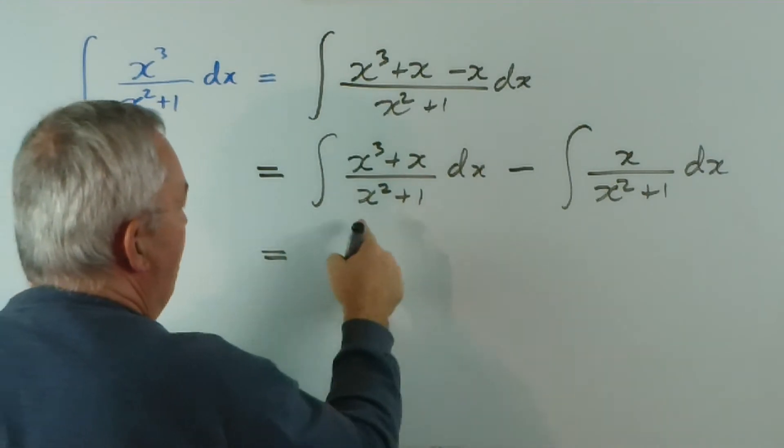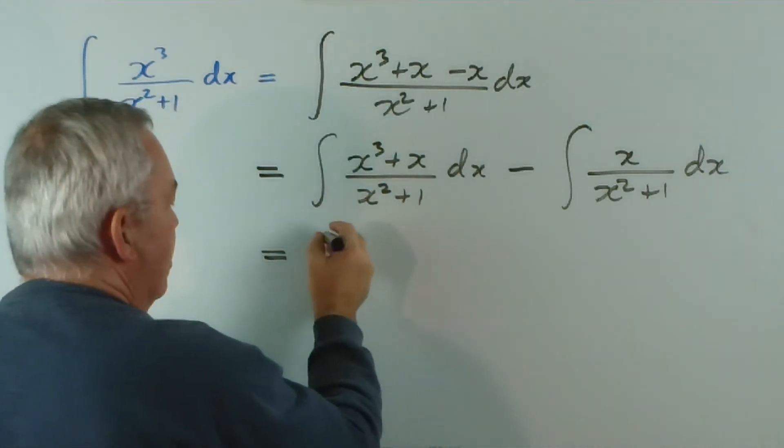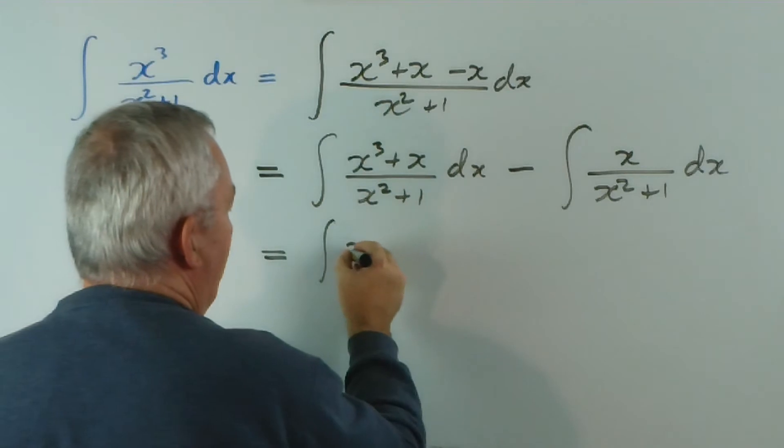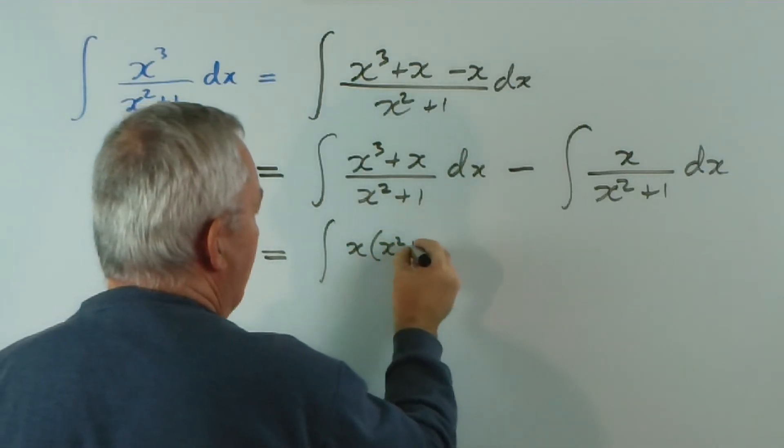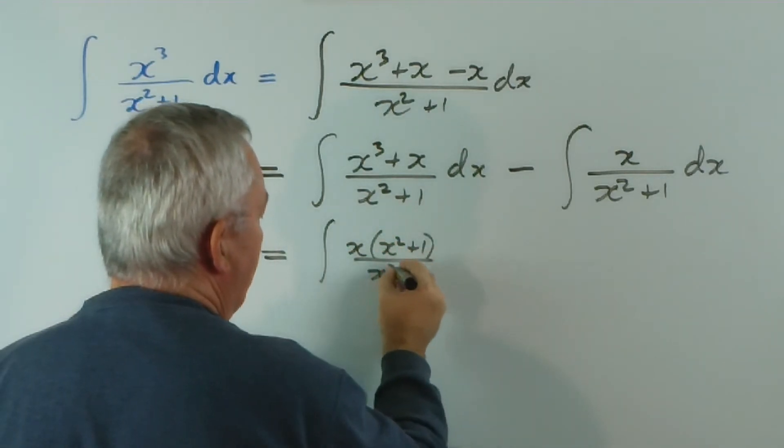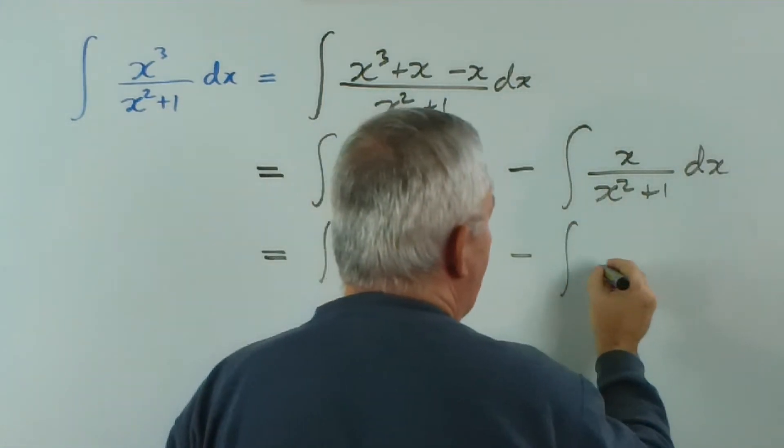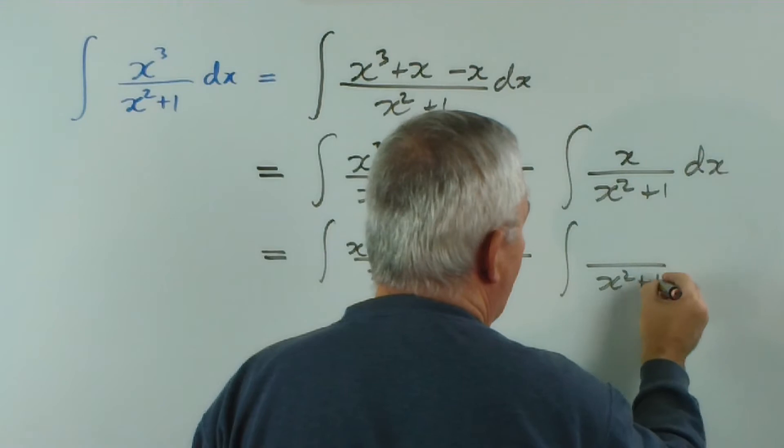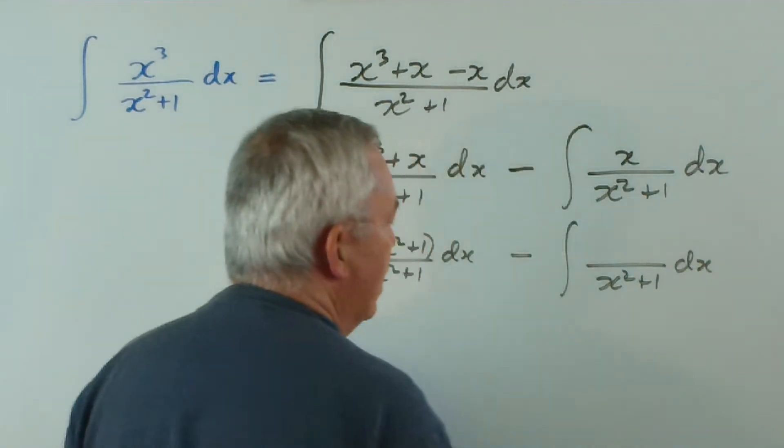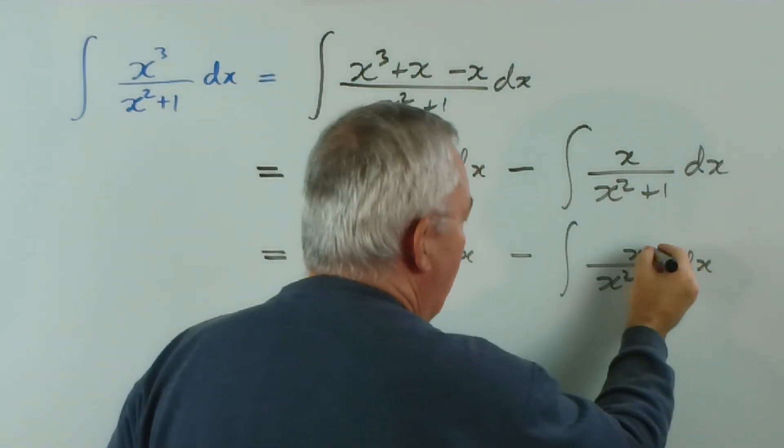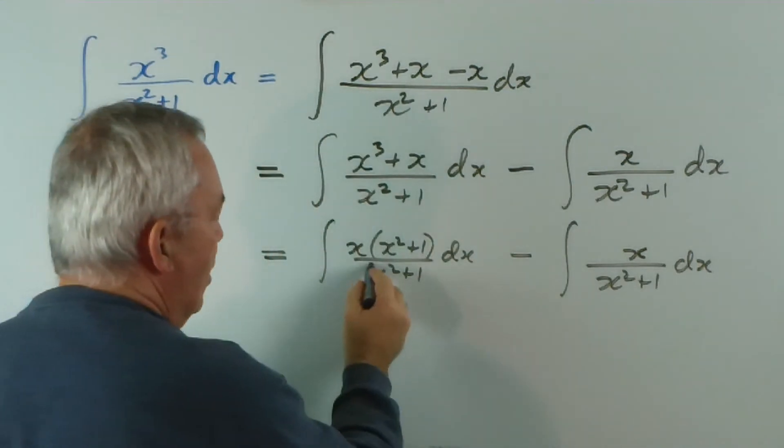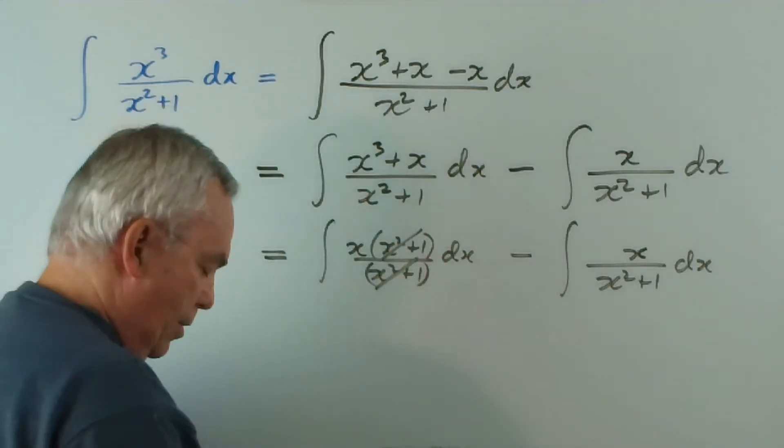So what I've done is I've separated that and that. And what do we get? This is the integral of x outside of x squared plus 1 dx. This is the integral of this with the x here. Now, this one's ready to go because these two factors divide out.